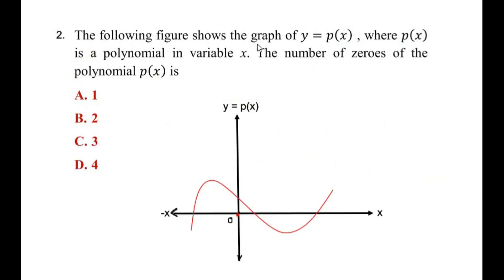Let us move on to the second question. The figure shows the graph of y equals p of x, where p of x is a polynomial in variable x. The number of zeros of the polynomial p of x is what we need to find. Any curve, when it touches the x-axis, gives us the number of zeros of the given polynomial.